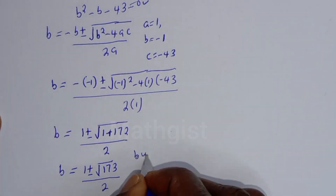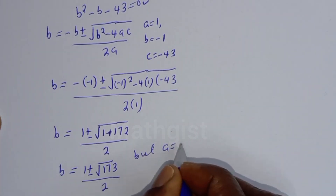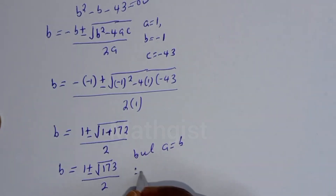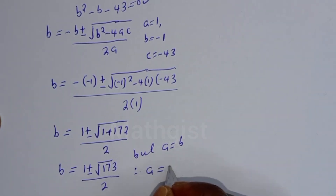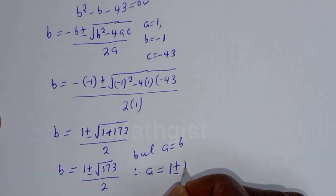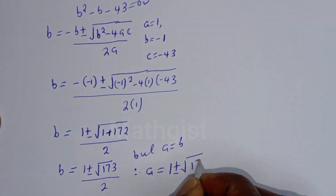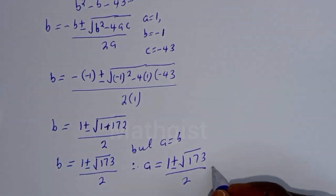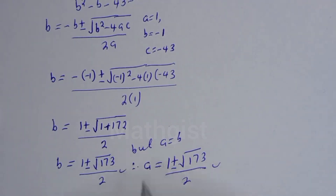Since A is equal to B in this case, both A and B are equal to (1 plus or minus square root of 173) over 2. These are the values of A and B from the first case. Now let's consider the second case.